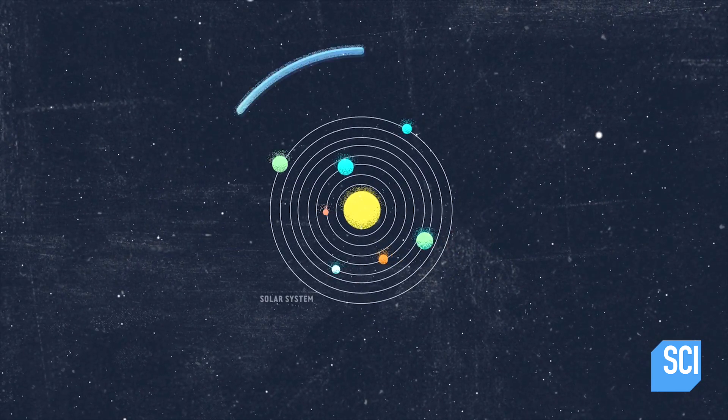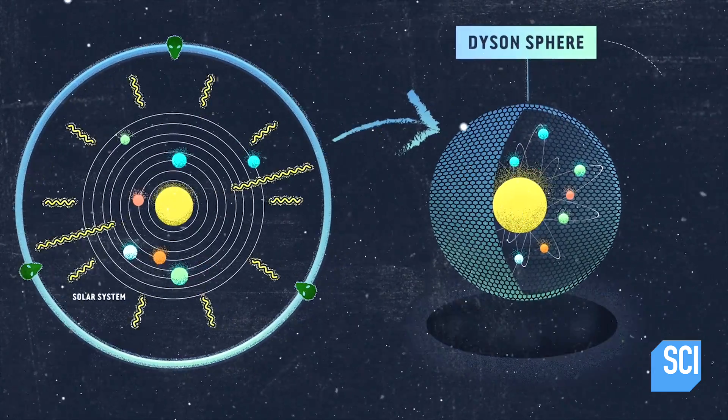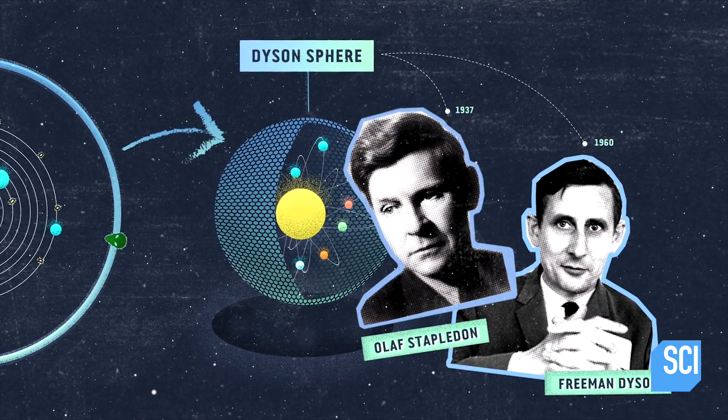They're believed to be alien megastructures built around a star to capture energy, first postulated by science fiction author Olaf Stapleton, then supported by physicist Freeman Dyson.